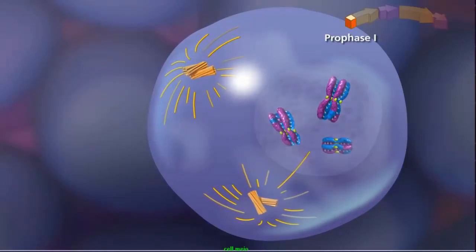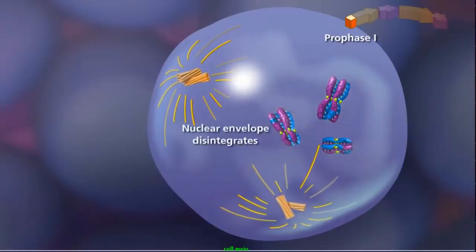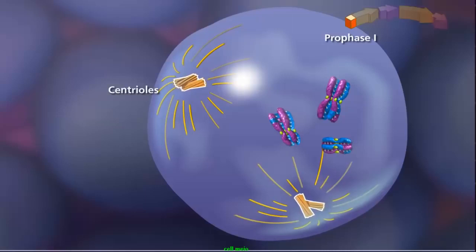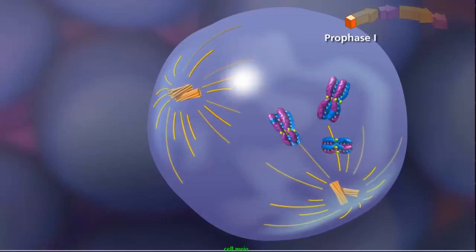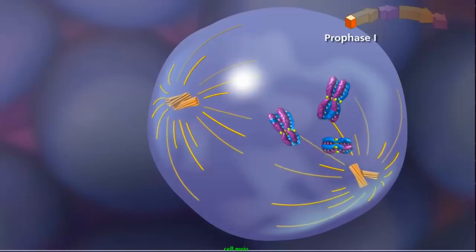Prophase I concludes with the fragmentation of the nuclear envelope as the duplicated centriole pairs move to opposite poles of the cell. As they move, the centrioles extend spindle fibers, forming the meiotic spindle.